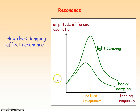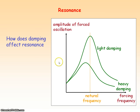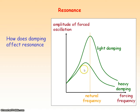Damping affects resonance. With heavy damping, a larger resistive force acts on the oscillation, so the amplitude at all frequencies is less than it would be with light damping. You also see that resonance — where maximum amplitude occurs — happens at a slightly lower frequency under heavy damping.